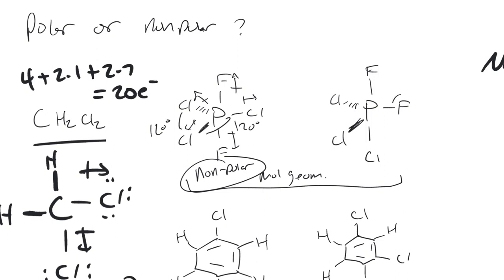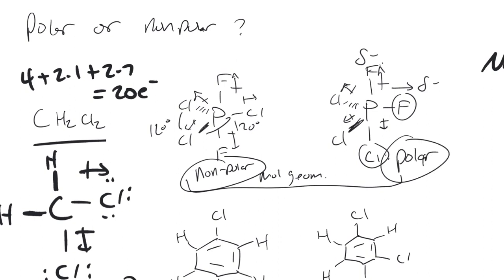But if we simply swap a fluorine and chlorine for each other, we end up with a polar molecule because we now have negative charge building up towards the fluorine. The partial negative charge opposite this fluorine is not the same, since chlorine is not as electronegative — so there's less negative charge building up on the chlorines. In this geometry, since our fluorine isn't opposed by another fluorine but instead by a chlorine, this molecule is polar, and we'd expect it to have a reasonable-size dipole moment.